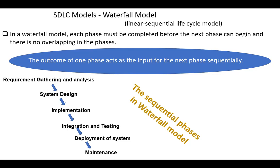The sequential phases in the Waterfall model are: requirement gathering and analysis, system design, implementation, integration and testing, deployment of system, and maintenance. You are familiar with the activities performed in each of these phases.